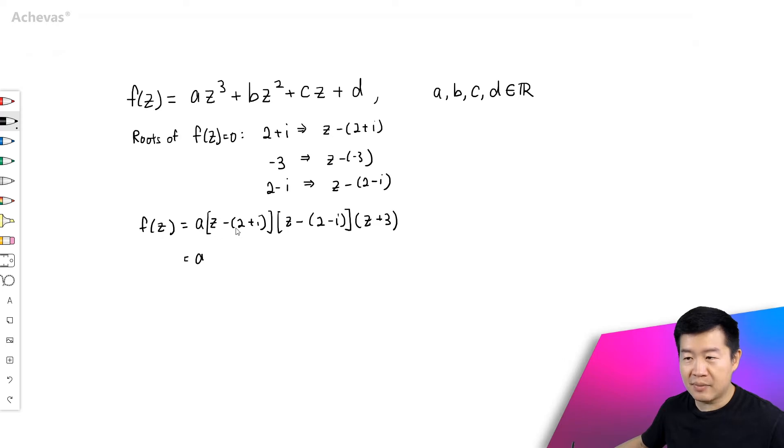Expanding this, z minus (2 plus i) multiply by z minus (2 minus i). Since these are conjugates of each other, what we can try to do is to make use of the result that we have in our theory outline. And that will be z squared minus 2 times 2z plus 2 squared plus 1 squared. So I have this multiplied by z plus 3. So this is going to be a times z squared minus 4z plus 5 multiply by z plus 3. Of course, if you don't know this result, it will be good if you do. If you don't know this result, just expand this as per normal. When you simplify, you will still be getting this anyway.